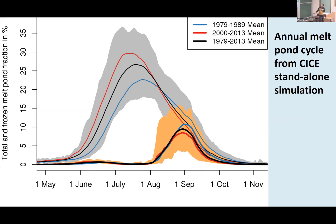Running standalone CICE simulations, we can see the annual cycle of total melt pond fraction in the Arctic — the fraction of sea ice covered by melt ponds. Melt ponds form in May and reach a maximum in July. The gray shading shows variability between 1979 and 2013. The orange line shows the fraction covered by a lid: lids start forming at the beginning of August, and by September all melt ponds are covered. There is a noticeable change over time — in the 1980s, melt pond fraction was lower than in the period after 2000.